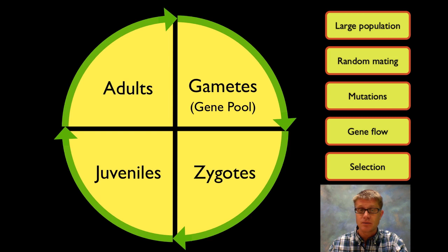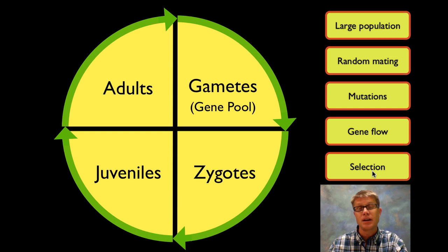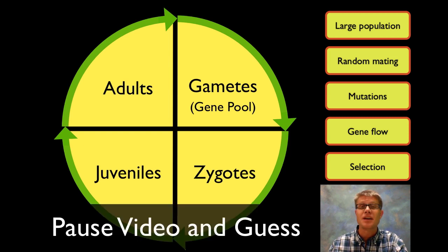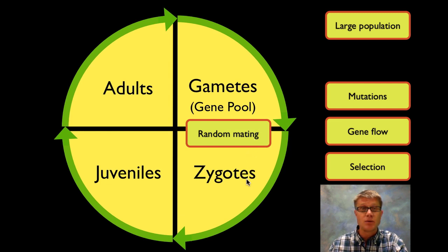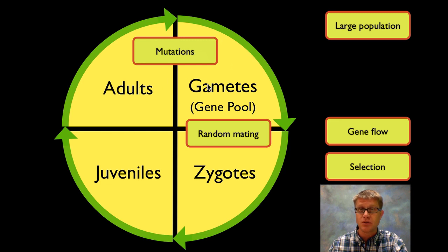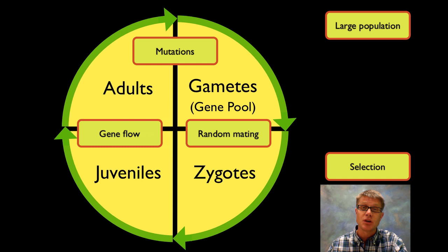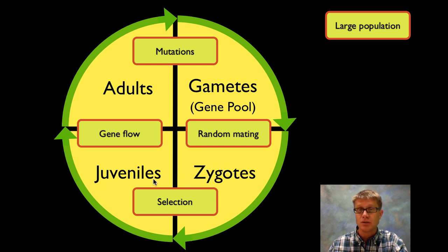I want to ask you a quick question. Given the life cycle for all of life, where would you put random mating? Would you put it here, here, here, or here? And likewise for mutations, gene flow, and selection. Pause the video and think for a moment. Random mating would actually go between the gametes and the zygotes. Mutations mostly occur between the adults and the formation of the gametes. Gene flow — immigration and emigration — goes between the juveniles and the adults. Selection mostly occurs between the zygote and the juveniles. If we keep all five conditions satisfied — no mutations, random mating, no selection, no gene flow — and a large enough population, the gene pool remains the same.